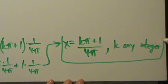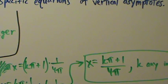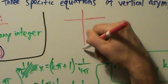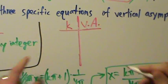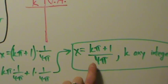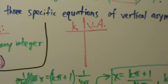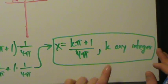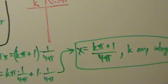Now we use this general equation to get three specific equations by plugging in three specific values of k. We set up a chart with a k column and a vertical asymptote column. We'll use k = -1, 0, and 1. Since k represents any integer, we could use any three integers, but it's best to keep it simple. The general equation is x = (kπ + 1)/(4π).